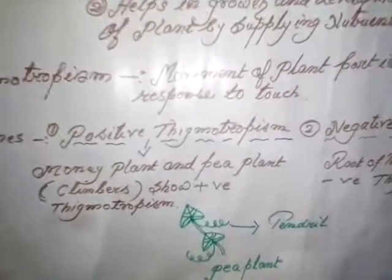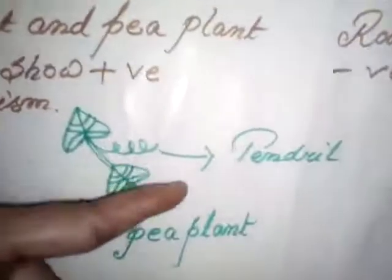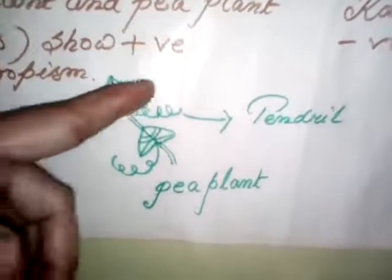There are some plants that cannot stand erect — they need a support to grow and are known as climbers, like the money plant and pea plant. When a money plant comes in contact with any support, it wraps around the support with the help of its stem and helps the plant move upward. In the case of the pea plant, it bears tendrils. I have drawn a pea plant with tendrils here. When the tendril comes in contact with any support, it wraps around the support and helps the plant grow upward.